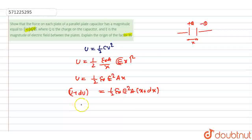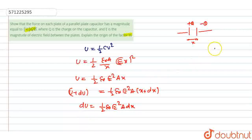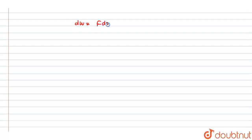So the increase in potential energy is dU, which equals (1/2)ε₀E²A·dx. This increase in potential energy equals the work required to separate the plates by distance dx. So the work dW equals dU, which equals F·dx. Therefore dW equals F·dx equals (1/2)ε₀E²A·dx.